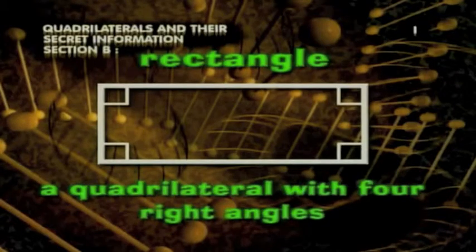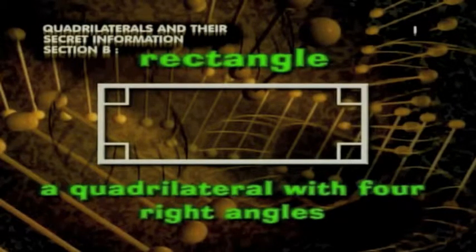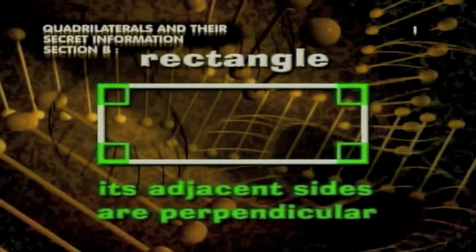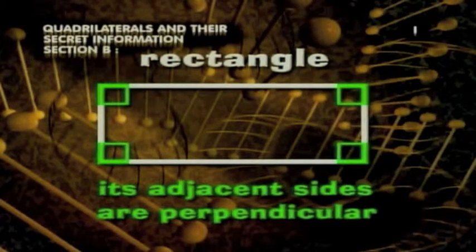A rectangle is a quadrilateral with four right angles. Because it has four right angles, its opposite sides are parallel, and its adjacent sides are perpendicular to one another.